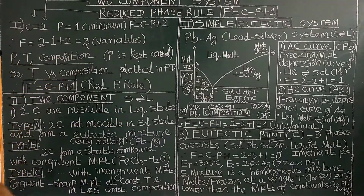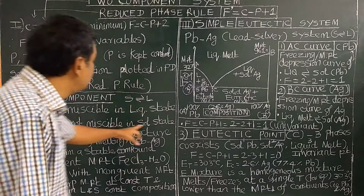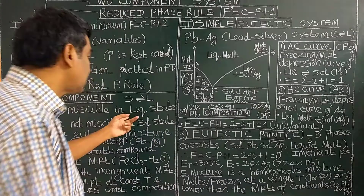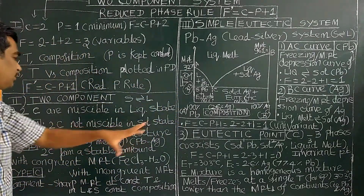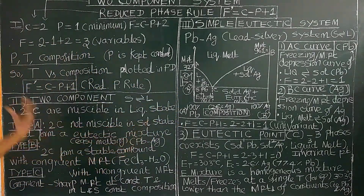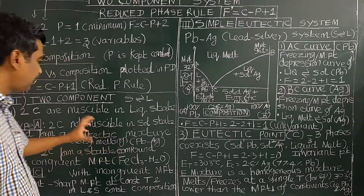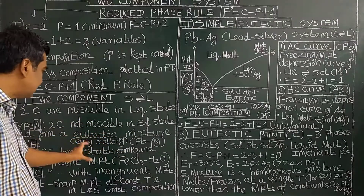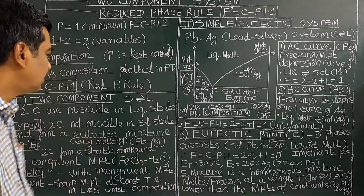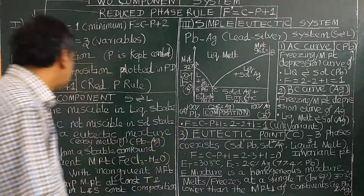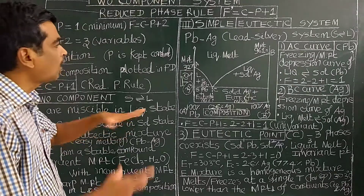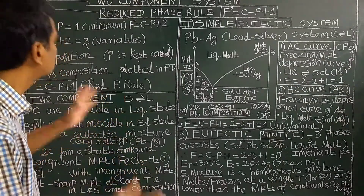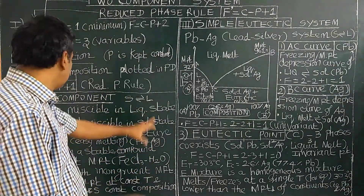For components miscible in liquid state, there are three types. Type A: the two components are miscible in liquid state but not miscible in solid state, and they form a eutectic mixture. Eutectic means easy-melting mixture in Greek. For example, lead and silver form a eutectic mixture — the two components are not miscible in the solid state but are miscible in the liquid state.